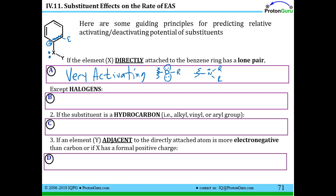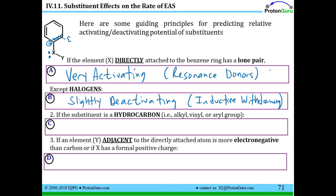Except for halogens. Fluorine, being the most electronegative atom, would never donate its electrons to that plus charge. The other halogens are too large — their lone pairs are far from the atom and don't match well with carbon's orbitals, so effective resonance doesn't occur. Halogens are actually slightly deactivating because they're electronegative — you don't want something pulling electrons away from a positive charge. This effect is called an inductive withdrawing effect.